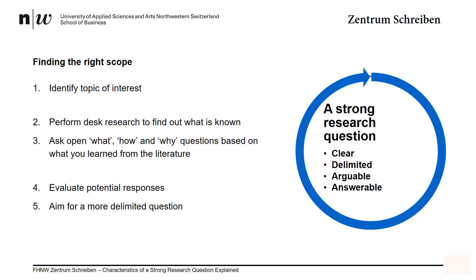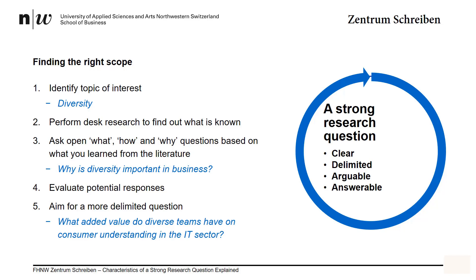First, you should identify your topic of interest. Let's say you've chosen diversity. Then you should perform desk research and see what academics and practitioners already know on the topic. Then you should ask open questions based on what you've read, such as: why is diversity important for business? Such questions require a line of argumentation to be answered. In this case, there are a lot of potential answers, so you should aim for a more delimited question. In this example, I've delimited it to the benefits of diversity on consumer understanding in the IT sector.